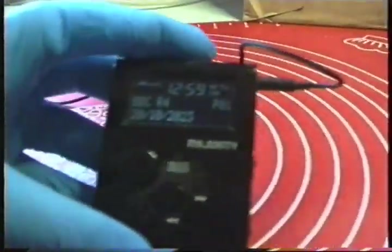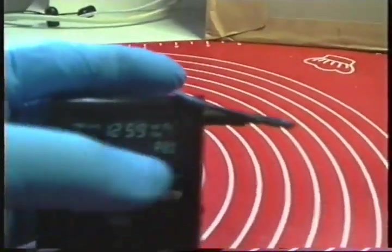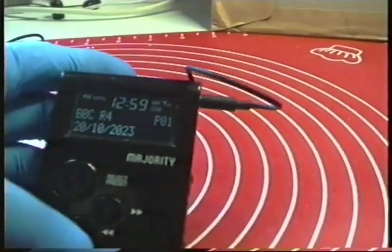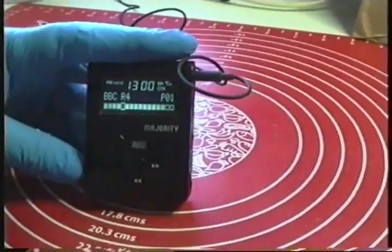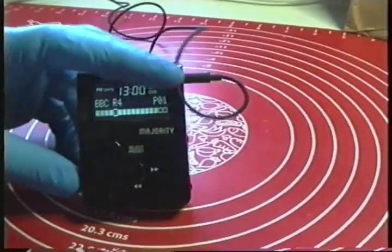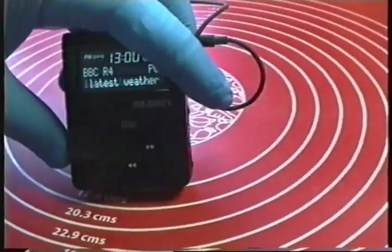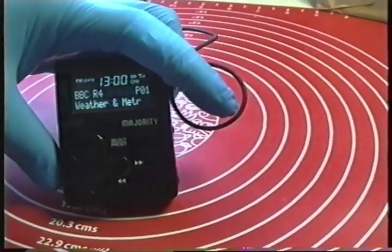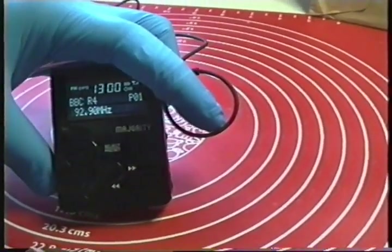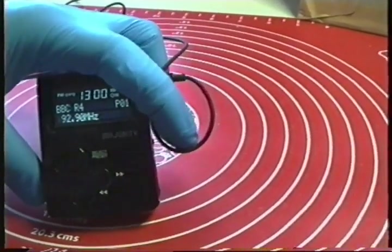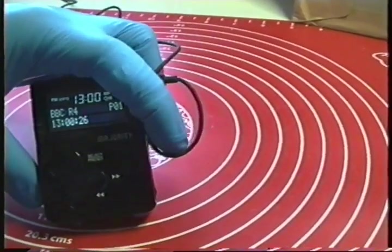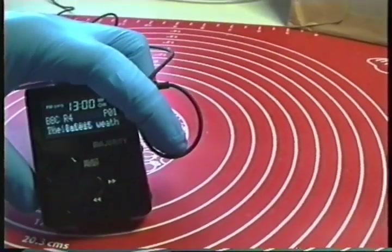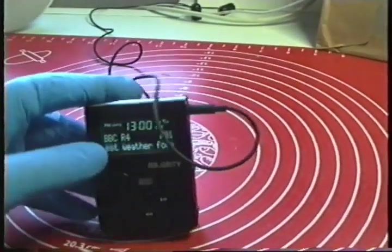So that is all the information. Now, the information here at the bottom row, we can change. So we can see date now, pushing info. We go to volume, we go to program type, we go to frequency, then next is time. Then next is date and then we go back to radio text.